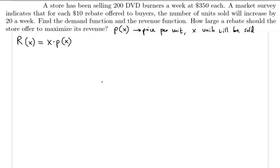We need to find the demand function. We haven't found it yet because it has to be in terms of X. The revenue function we already have in form, but to complete it we need the missing piece, which is P of X — the demand function itself.